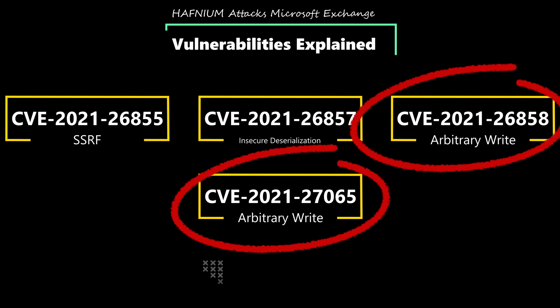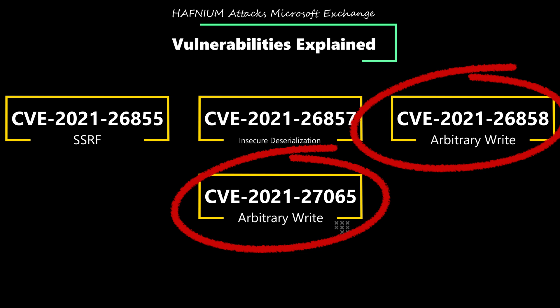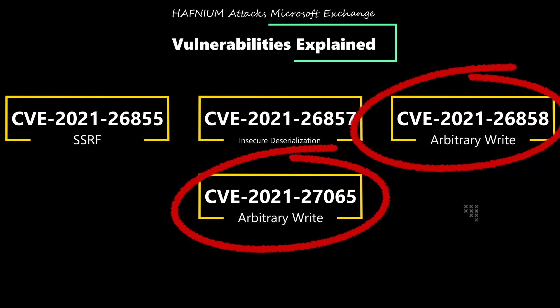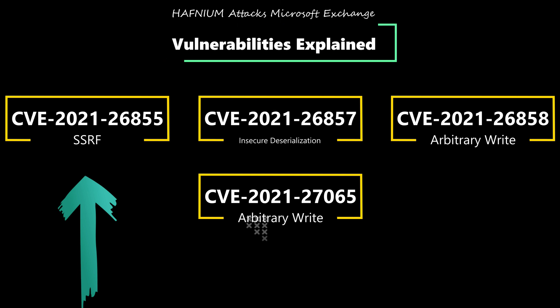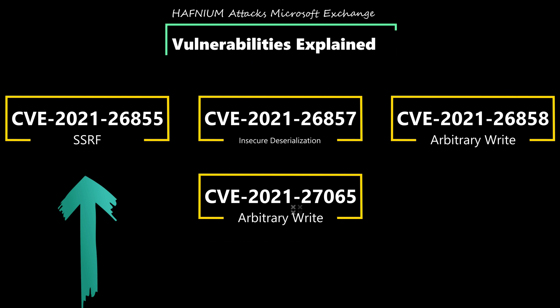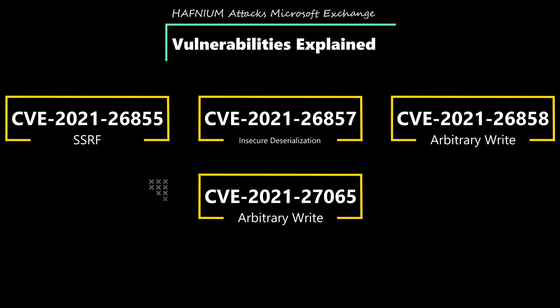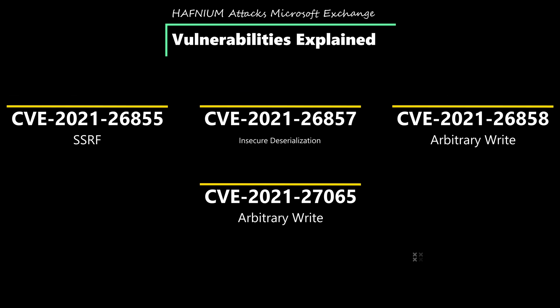Both CVE-2021-26858 and CVE-2021-27065 could use the first exploit, CVE-2021-26855, to serve as the authenticated session to leverage either of these last two exploits.